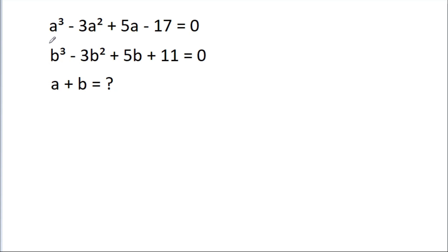In this video, we have given that a cubed minus 3a squared plus 5a minus 17 is equal to 0, and b cubed minus 3b squared minus 5b minus 11 is equal to 0. Then we have to find a plus b.